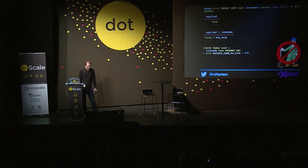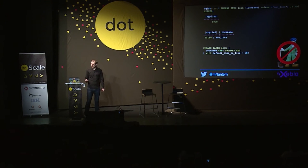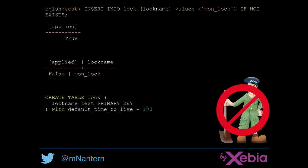So now that we have seen the theory, how do we implement leader election with Cassandra? Lightweight transactions can be used with INSERT using the IF clause. A client acquires a lock by issuing the first statement. If it is the first one, the statement is applied and it has the lock. If the lease already exists and is held by someone else, we get back the information that the statement wasn't applied.